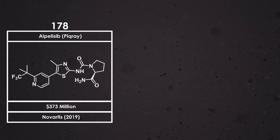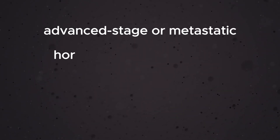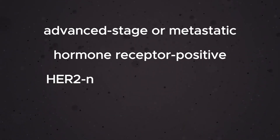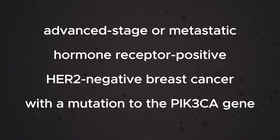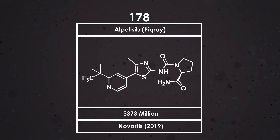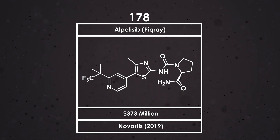Alpelisib can be used in combination with fulvestrant, which we saw in a previous video, for the treatment of advanced-stage or metastatic hormone receptor-positive, HER2-negative breast cancers with a mutation to the PIK3CA gene. Alpelisib was approved after phase 3 clinical trials showed that the alpelisib and fulvestrant combination was more effective at increasing progression-free survival than fulvestrant alone.